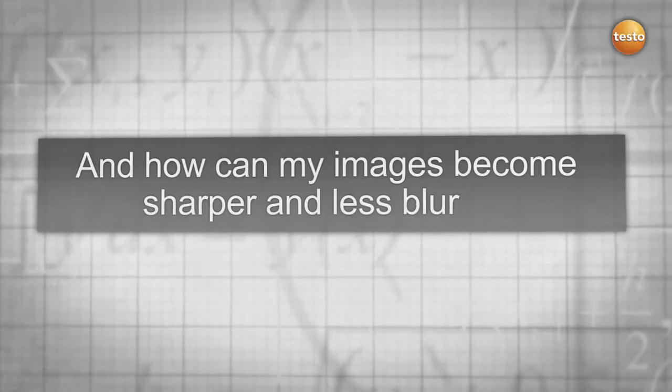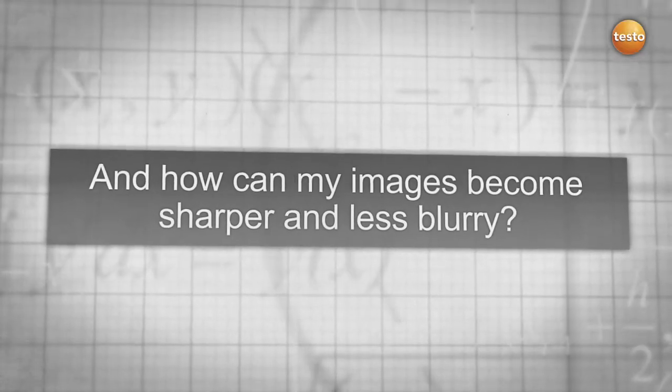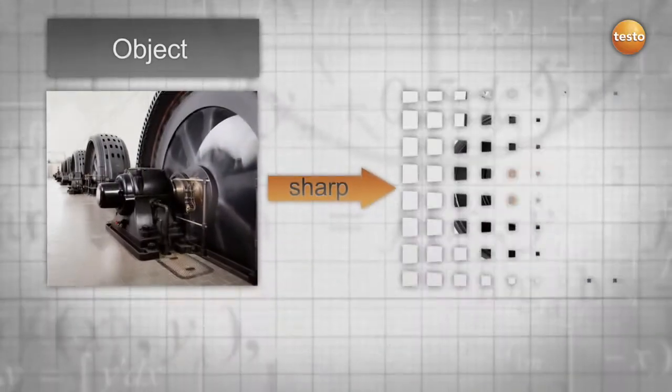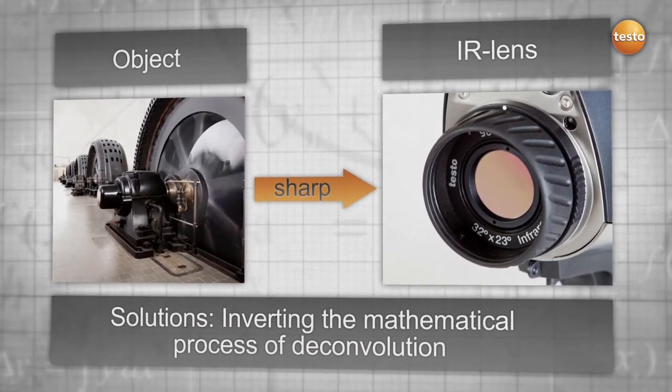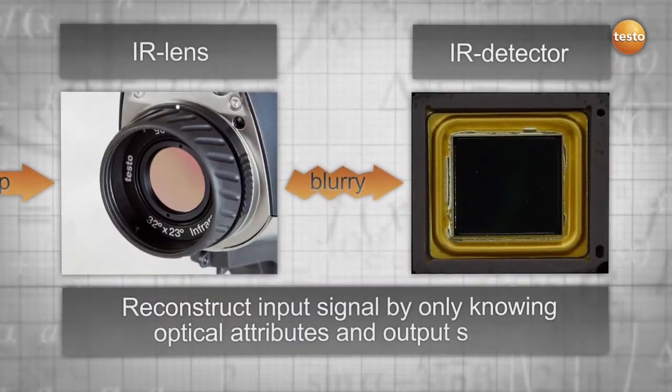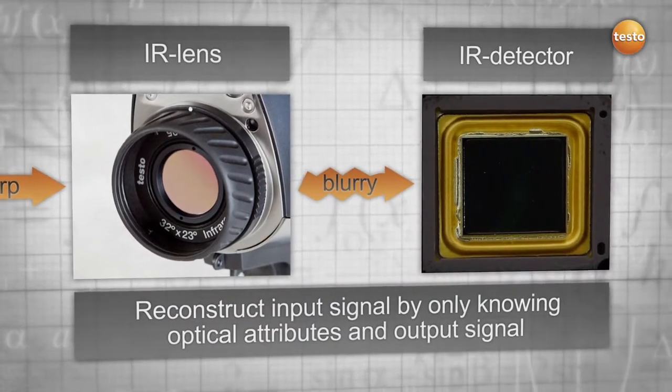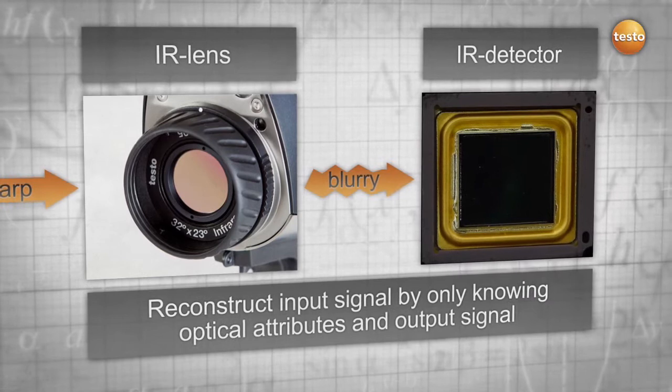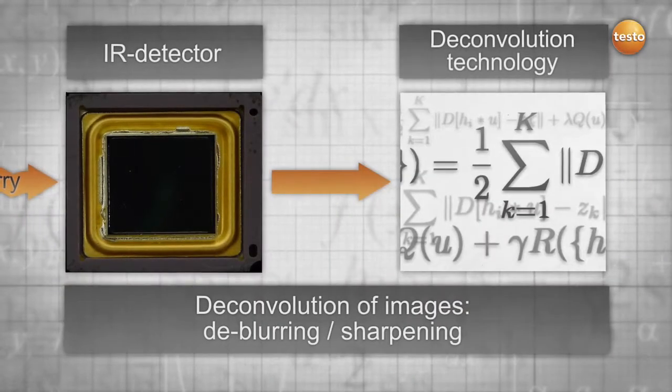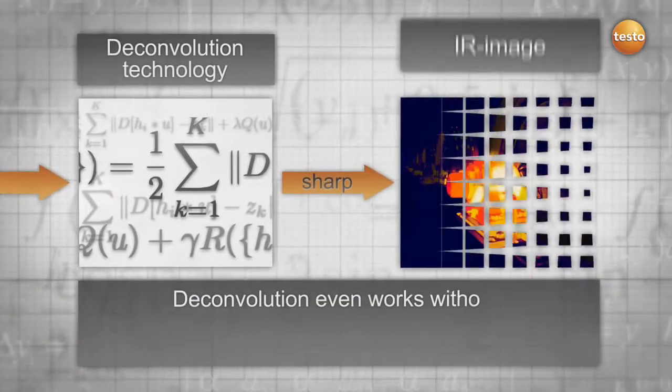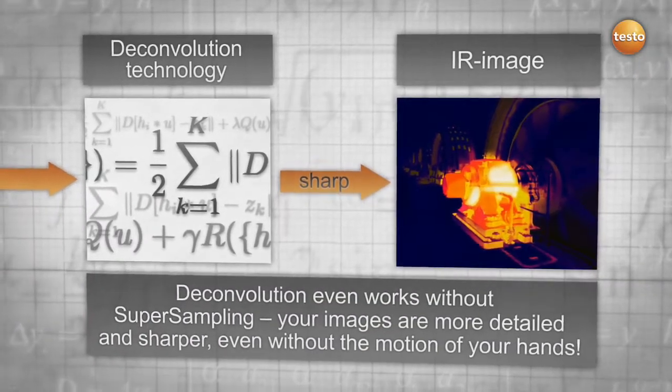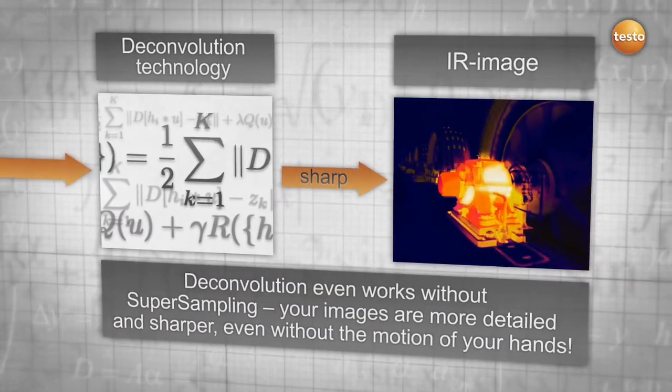Another challenge is to get clear and sharp pictures out of your measurements. With the help of deconvolution, we are able to reconstruct the input signal by recalculating the output signal with the optical attributes of the lens. Your images are therefore less blurry and sharper. And did you know that this technology works independent from super sampling? Your images are more detailed and sharper even without the motion of your hands.